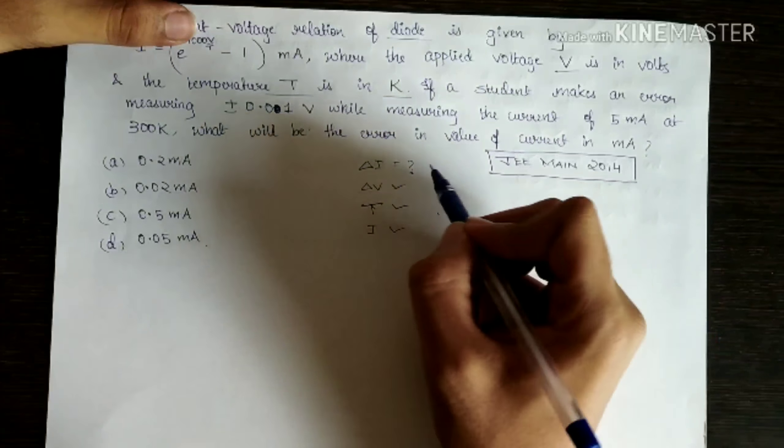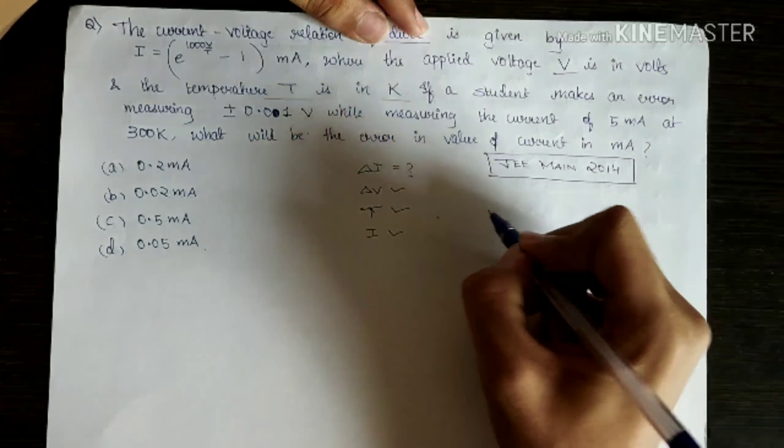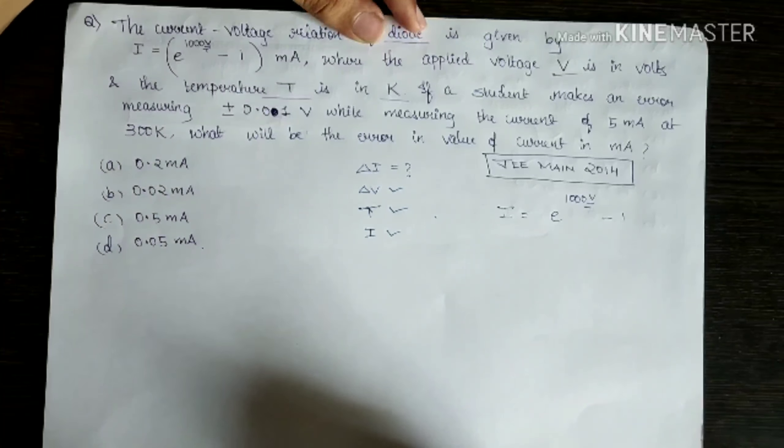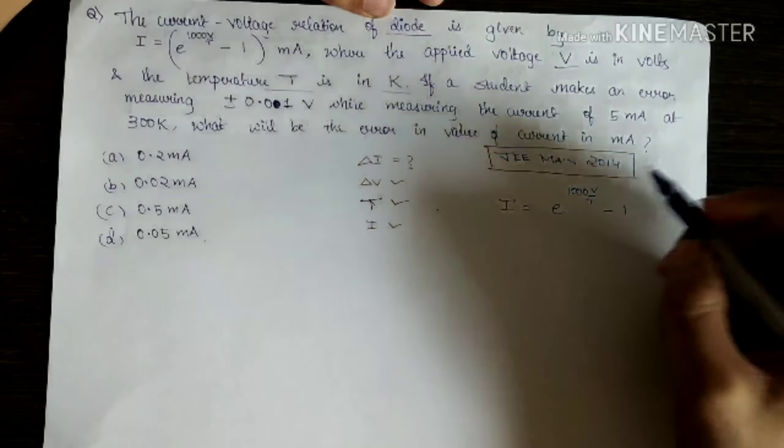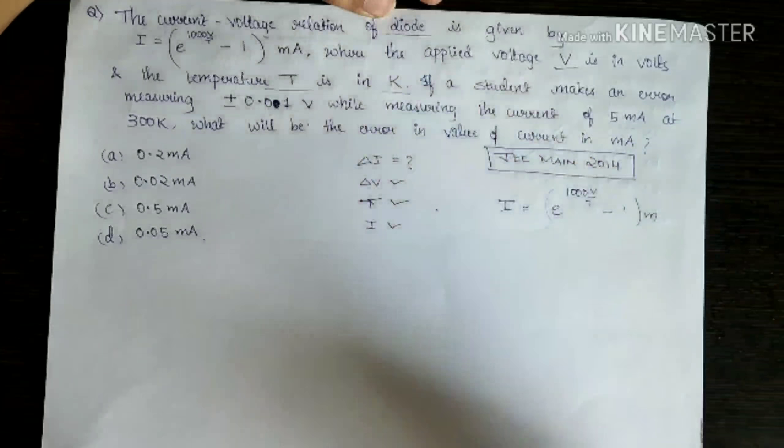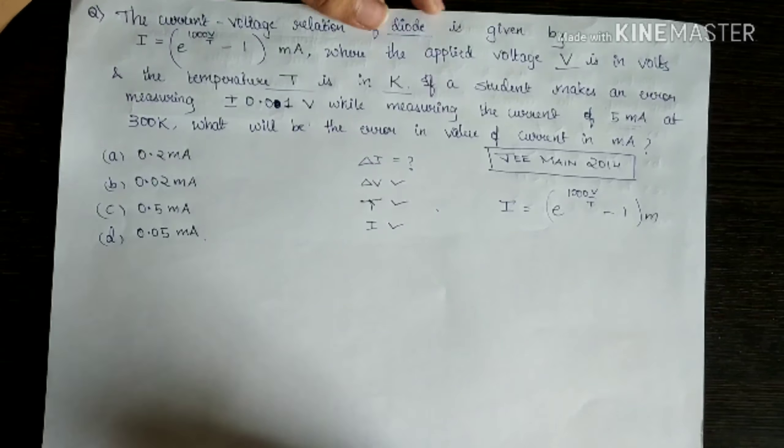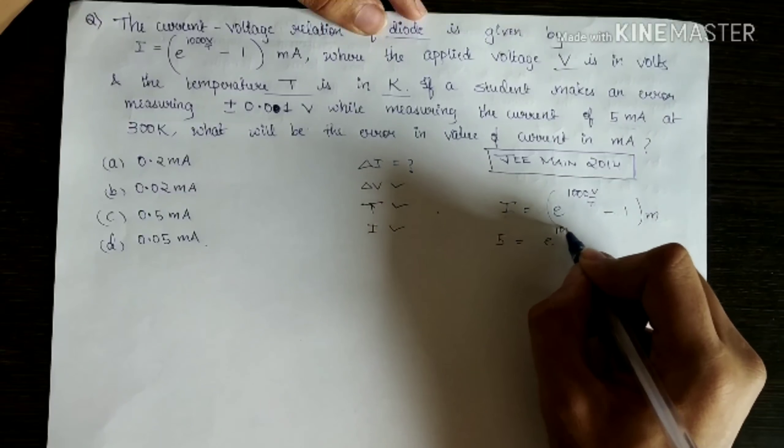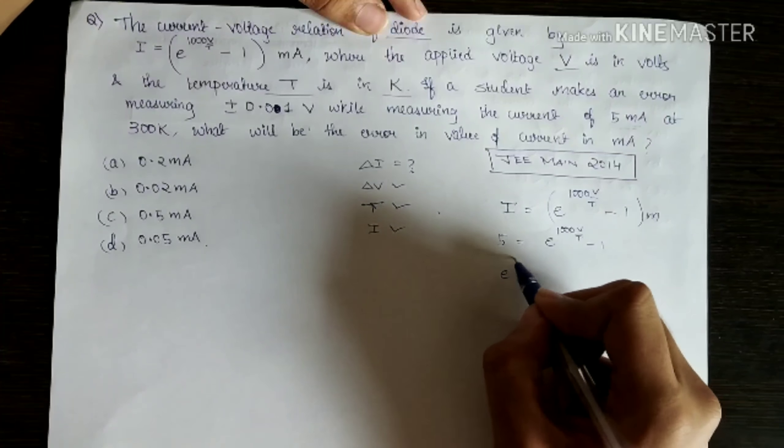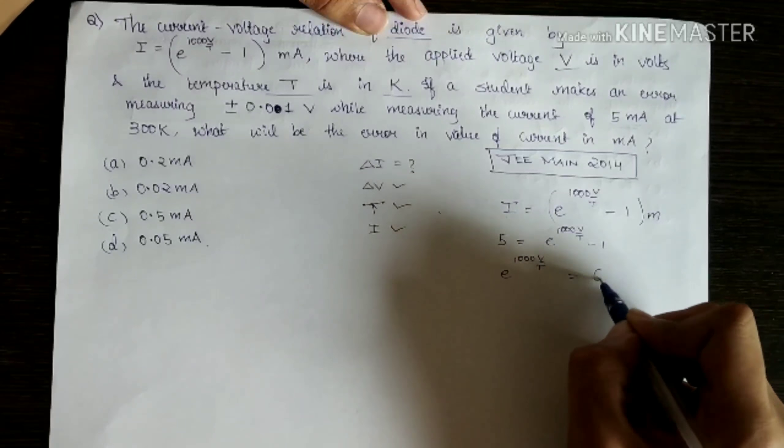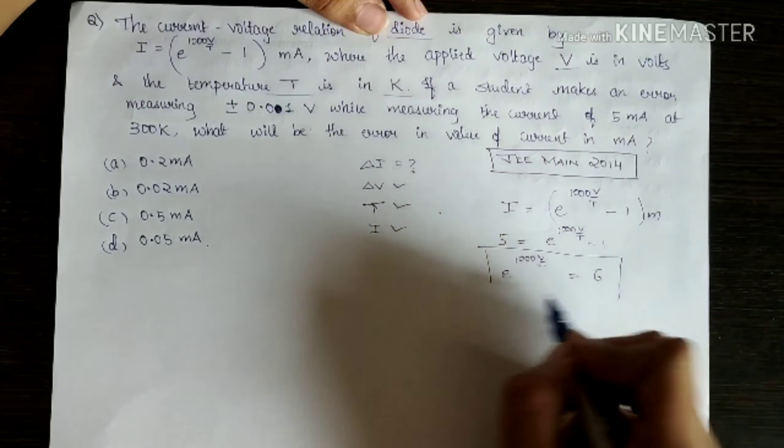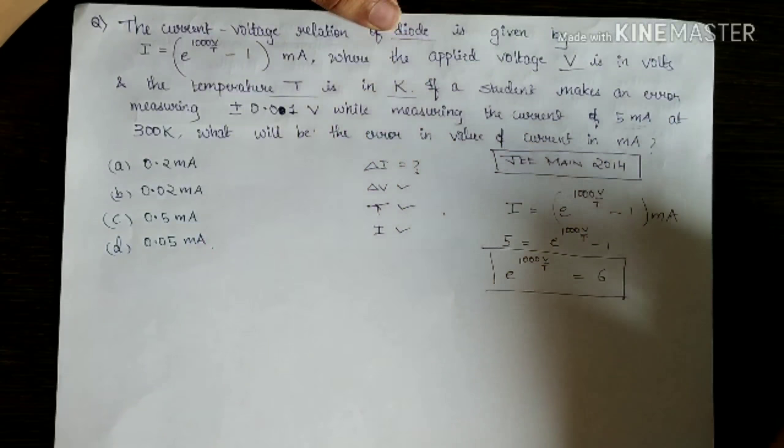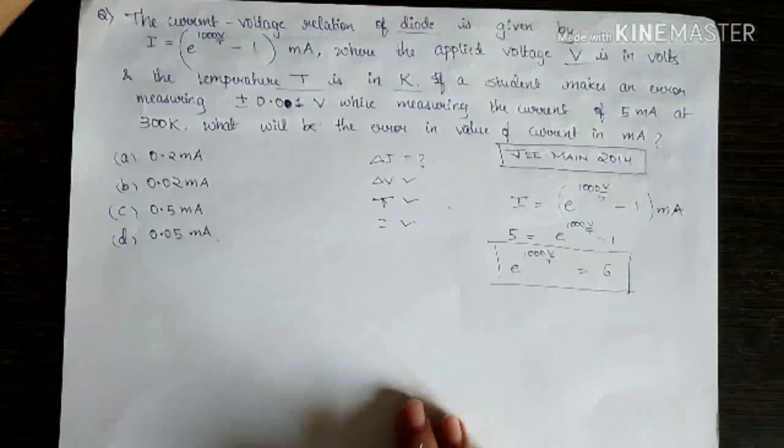Now, how do we find delta I? First, see this equation: I = e^(1000V/T) - 1. This is in milliamps and the current given here is in milliamps, that is 5 milliamps. Now what you do is, we will substitute 5 over here. 5 = e^(1000V/T) - 1, and e^(1000V/T) = 6 is what we get. This will just be a number because milliamps cancels. We will keep this aside because we will need it later.